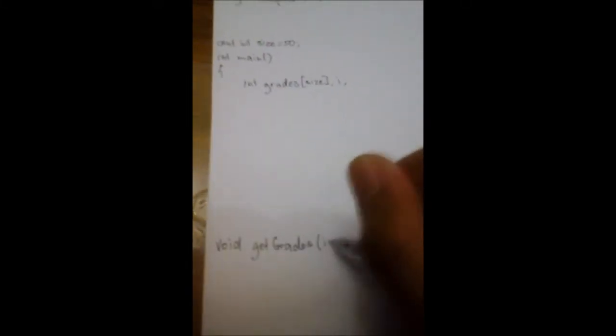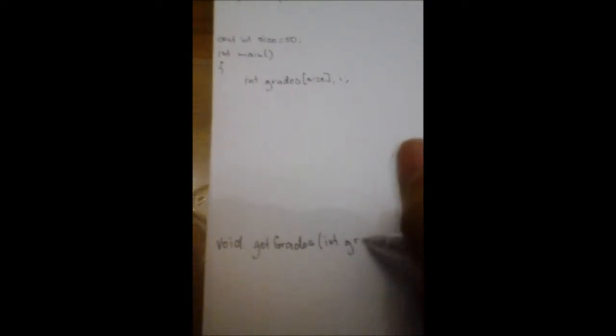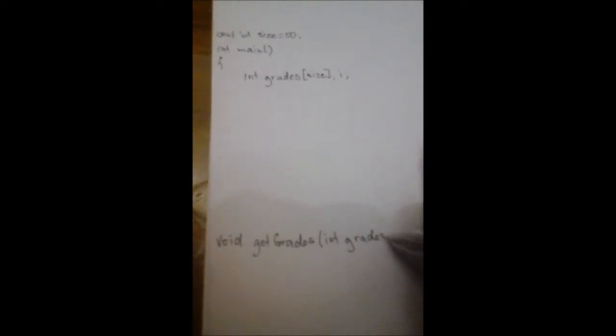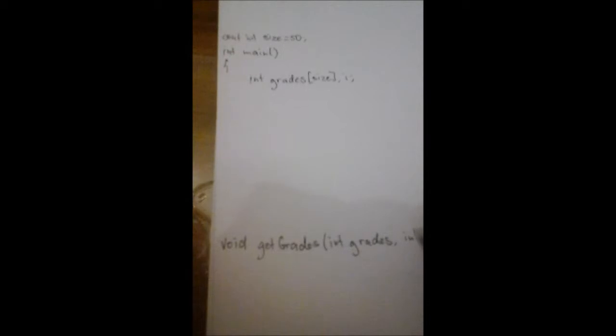So we leave a space here. Then we write here void for our getGrades. Getting the grades. Then our parameters are int grades, our array, and int i.